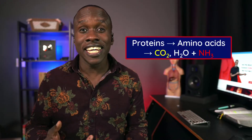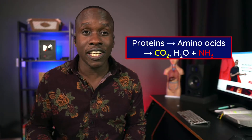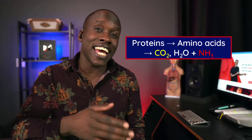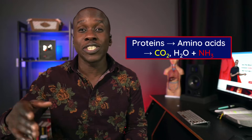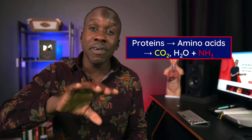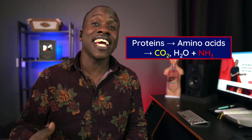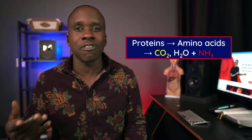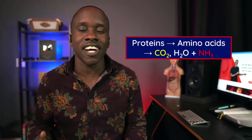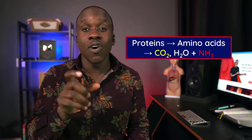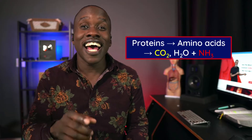Now, the different parts of my food were broken down in different ways. For example, I had some chicken. That chicken had protein in it. And that protein, when it gets broken down, it gets broken down into amino acids. And those amino acids, as they get broken down as well, some of the byproducts are carbon dioxide, water, and ammonia.